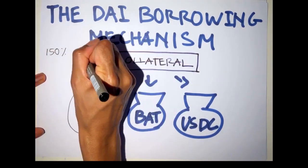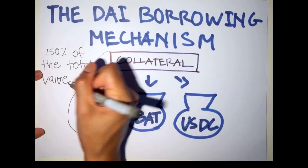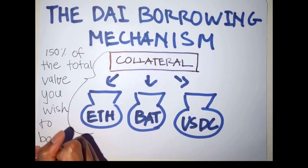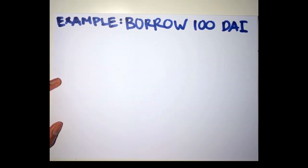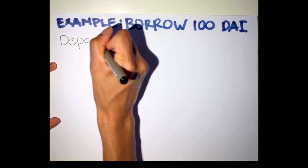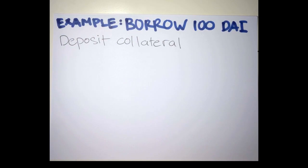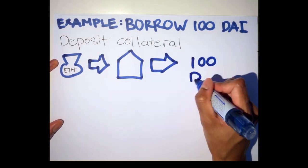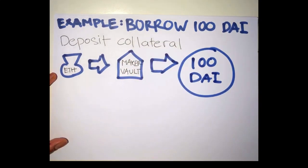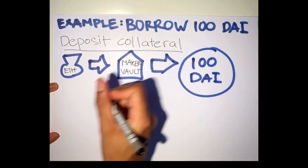It has to be 150% of the total value of DAI that you wish to borrow. For example, if you want to borrow 100 DAI, you would need at least $150 worth of ETH, BAT or USDC. Once you deposit your preferred collateral, the amount of DAI that you need will be minted for you to use.